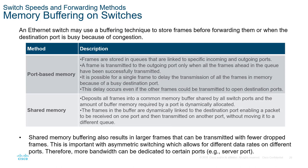When a switch is congested and cannot forward data, it can either drop the frame or hold it in memory. There are two types of memory buffering: port-based and shared. In port-based memory, each port has its own queue — data waits for preceding data to be sent before the next is forwarded. In shared memory, the entire switch shares a common buffer and compiles data dynamically, rather than processing strictly per-port.